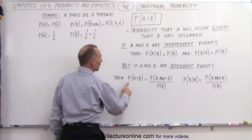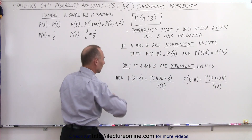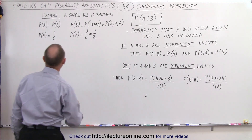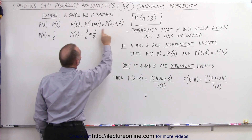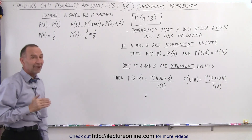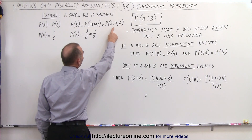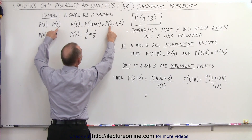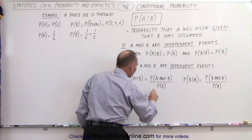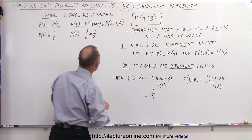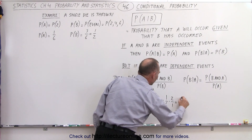Now let's calculate the probability that A will occur given that B has occurred. That equals the probability of A and B divided by the probability of B. Looking at the overlap: A is getting a 2 (1 out of 6), and B is getting 2, 4, or 6. There is only one overlap — getting the number 2 — so the probability of A and B is 1 out of 6. Dividing by the probability of B, which is 1 half, gives us 1/6 times 2/1, which equals 1 third.